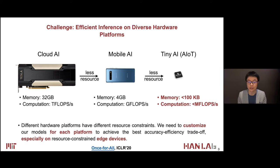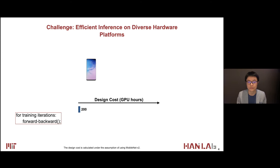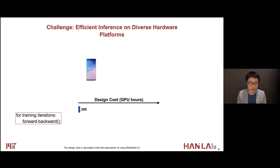This customization can be quite expensive. When we have just one mobile device, we can train one model, for example MobileNet V2. The basic schedule takes about 200 GPU hours — roughly 4 GPUs for 2 days — to obtain a trained MobileNet.